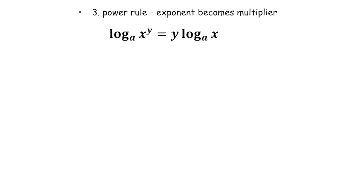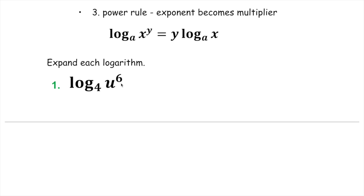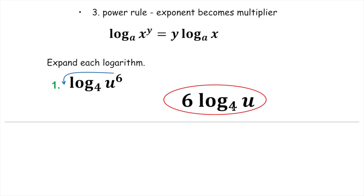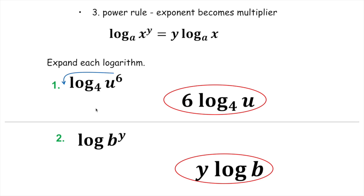The third rule says that the exponent becomes a multiplier. Let's go through an example before we explain it. The exponent becomes a multiplier, meaning we multiply the entire logarithm by the exponent — we take the exponent, which is six, and move it way out in front. It becomes six times log base four of u. Whatever the exponent was, we just move it out to the front — that becomes our multiplier. Similarly, if the exponent is y on log base ten of b, we move the y out in front: y times log b.